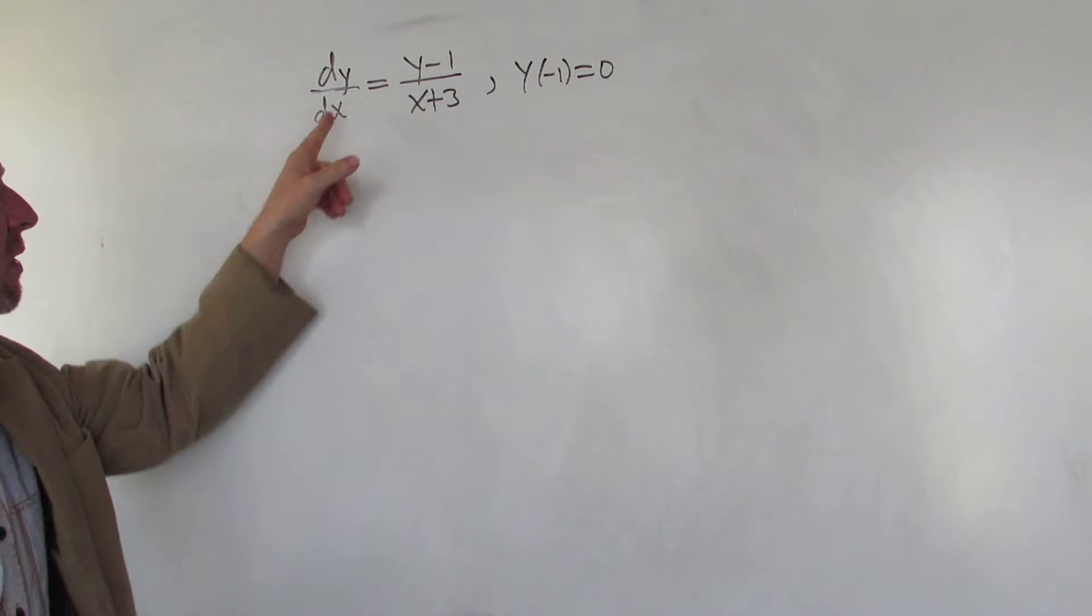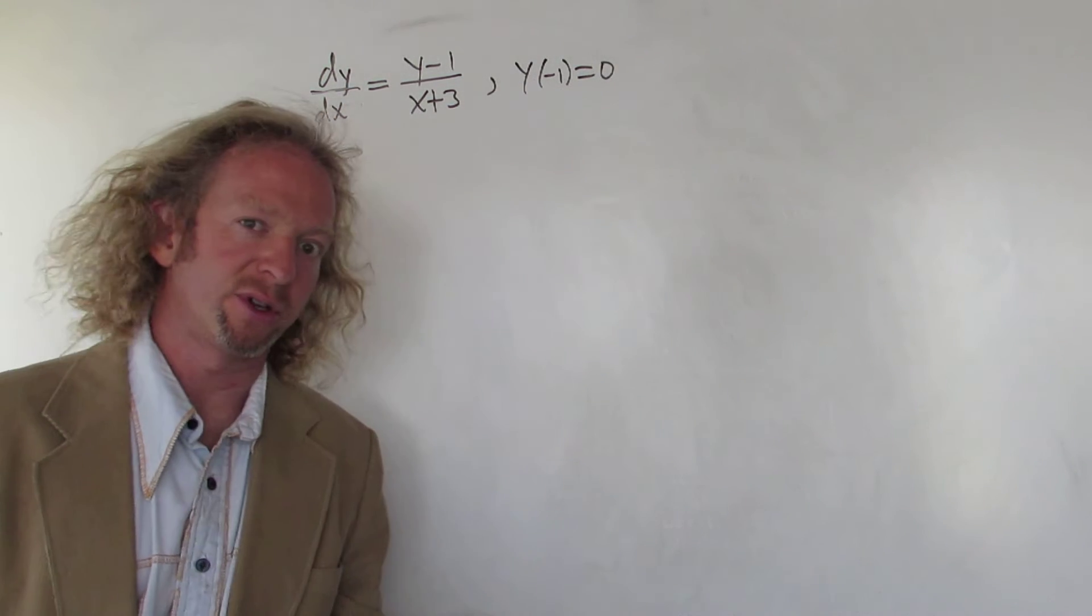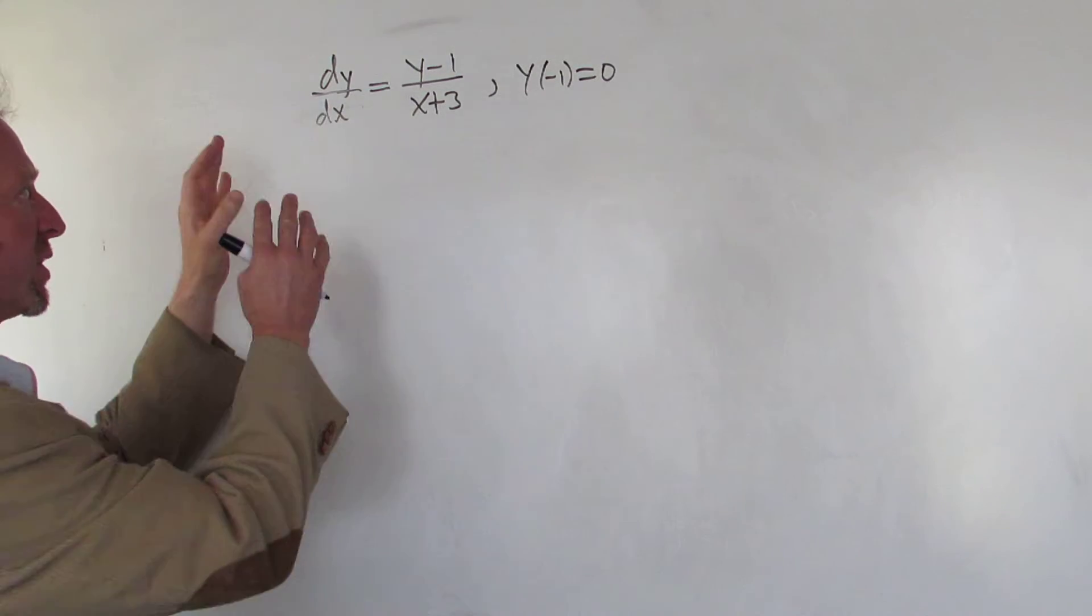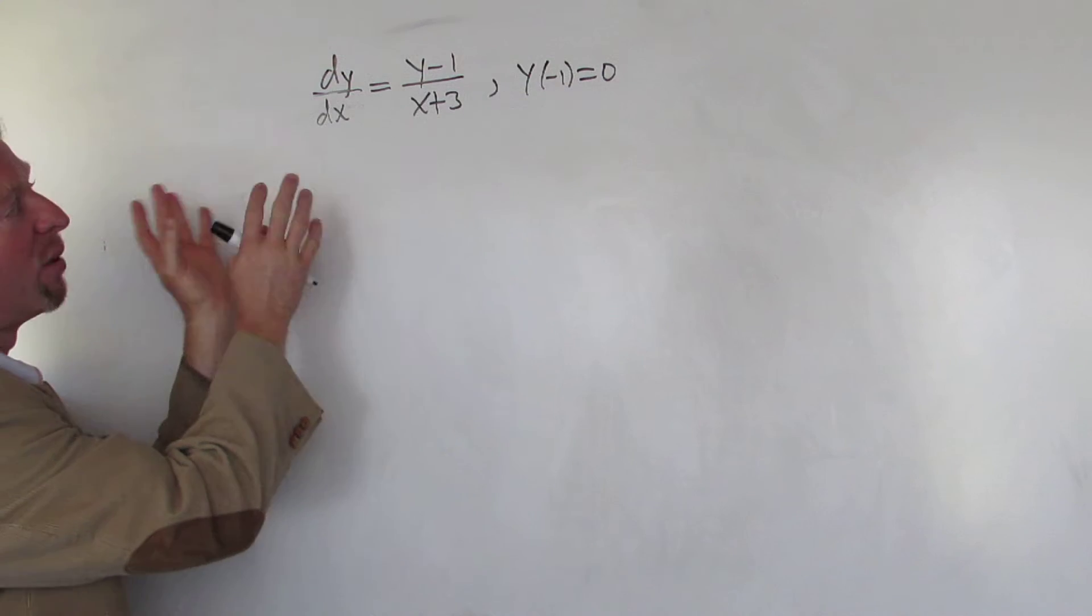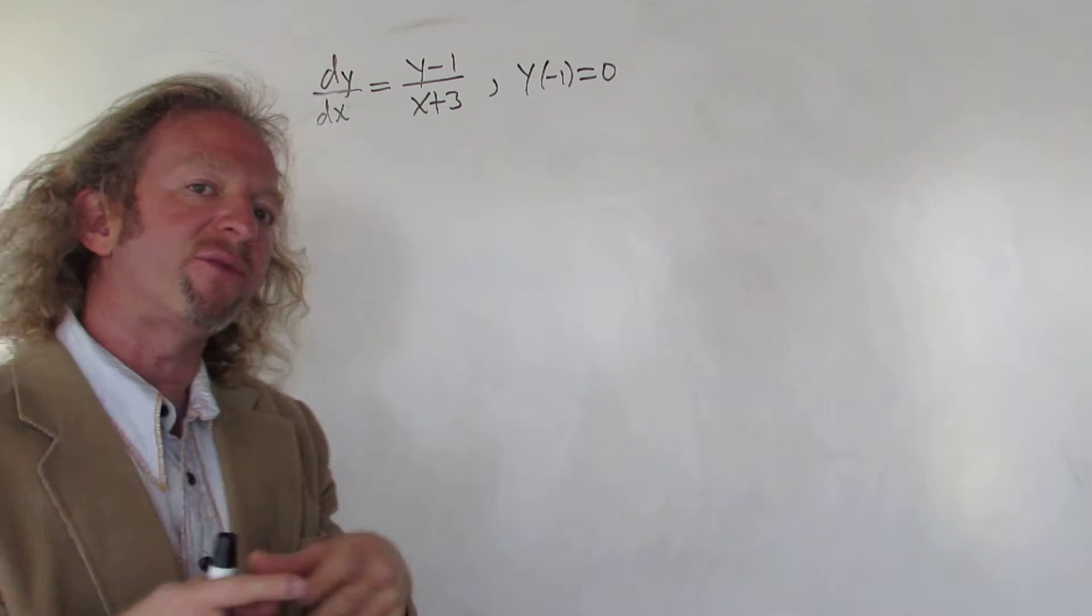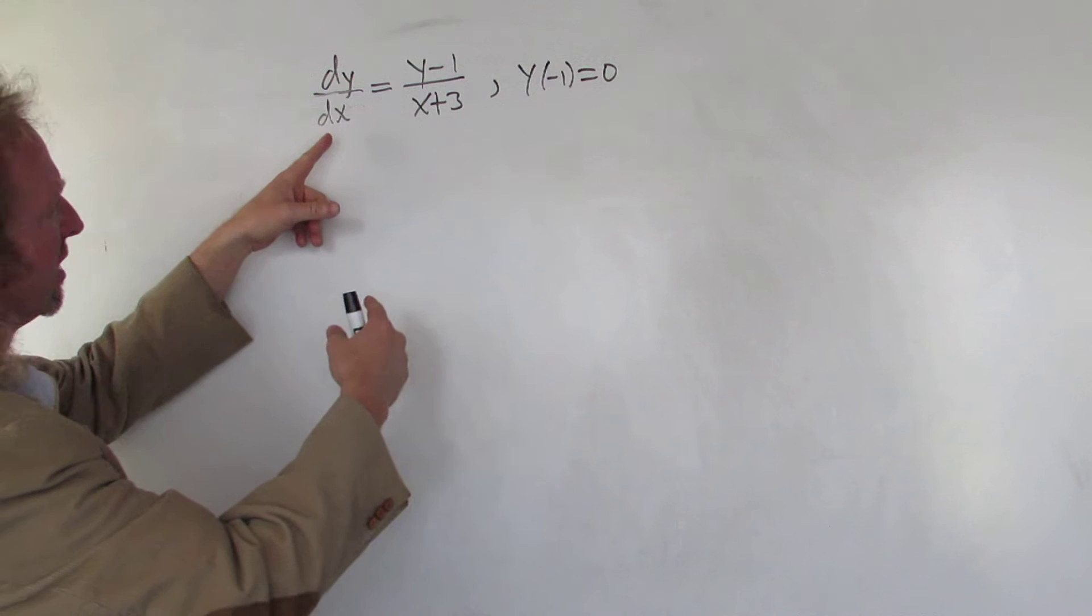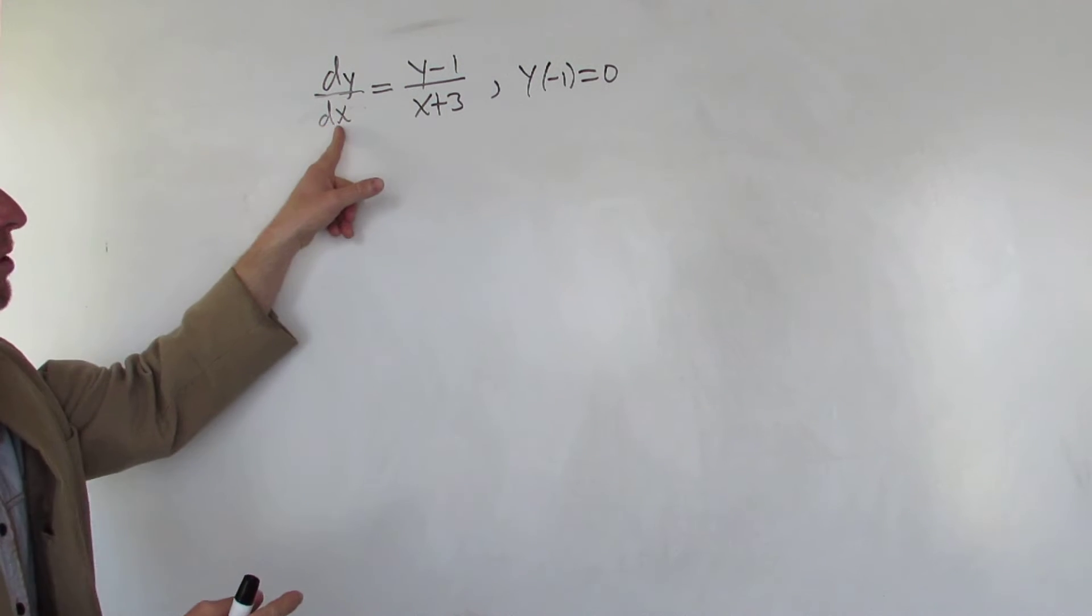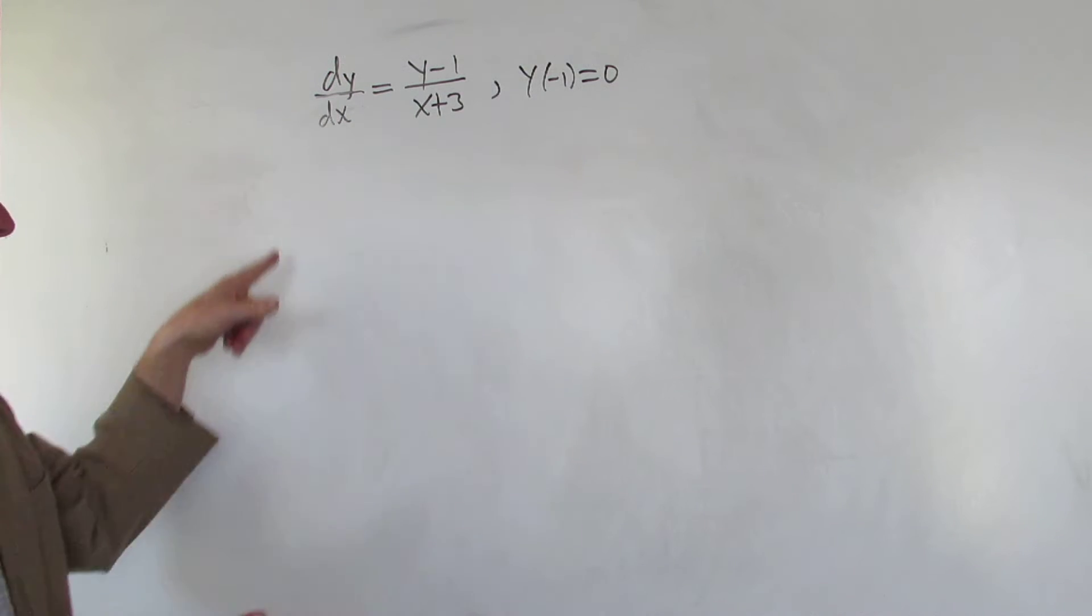This appears to be a separable differential equation. What that means is you can separate it - you can write stuff with y, dy on one side equals stuff with x, dx on the other side. In this case, we can divide by y minus one and multiply by dx, and that will give us what we want.